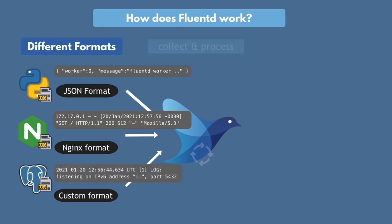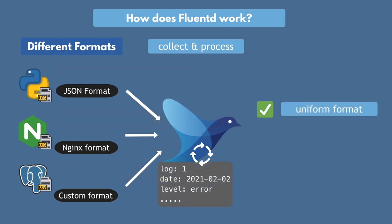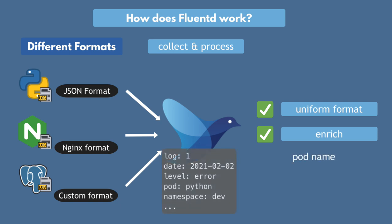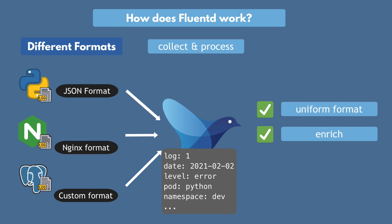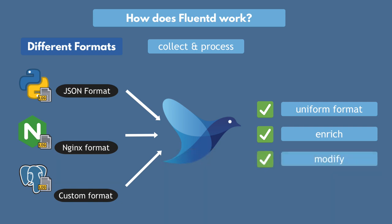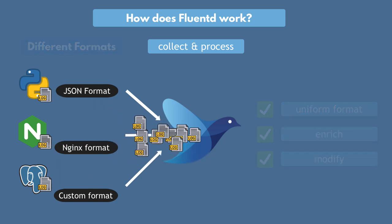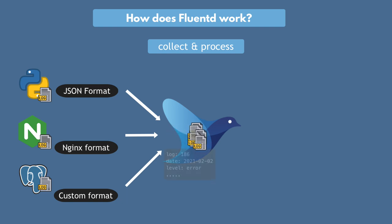So Fluentd will process them and reformat them into a uniform way. On top of that, you can enrich your data with Fluentd — you can add additional information to each log entry like pod name, namespace, container name, and so on. So for example, you can later group logs of the same pod or logs of the same namespace. Or you can even modify the data in a log. So now you're streaming your logs from all the applications into one unified format through Fluentd.